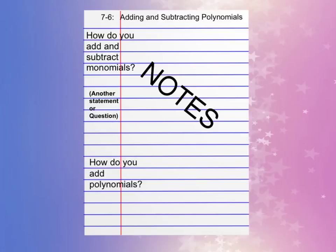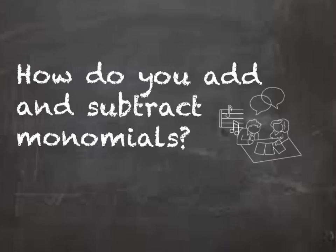Here's an example of what your paper should look like for Cornell notes for this section. How do you add and subtract monomials?